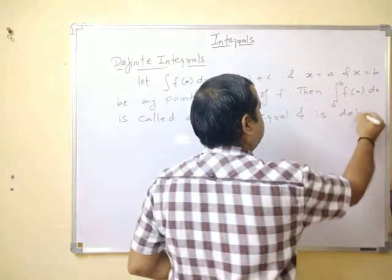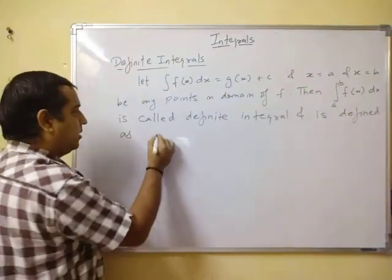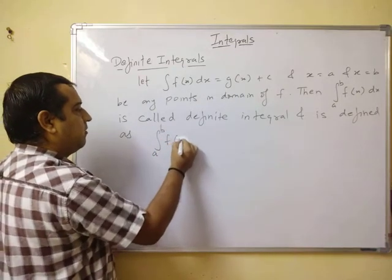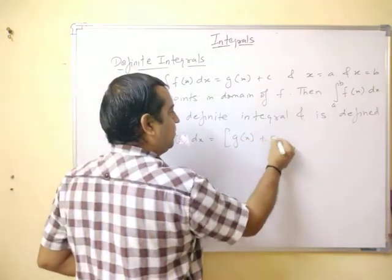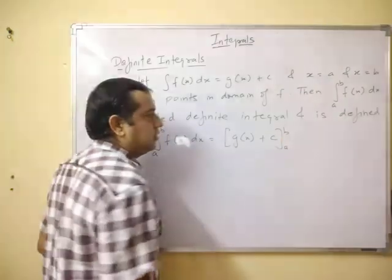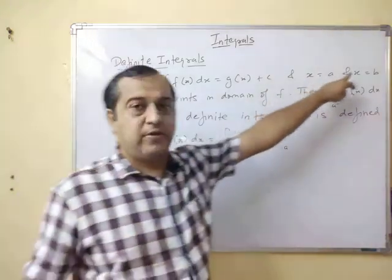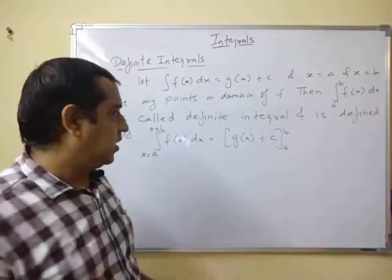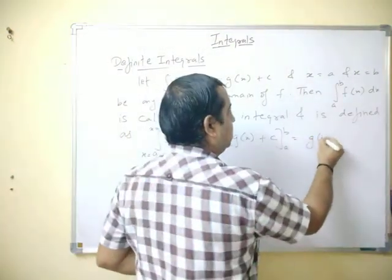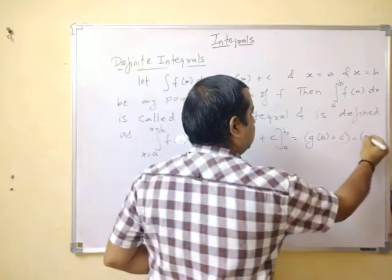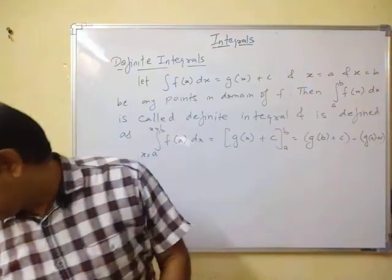It is defined as: integral from a to b of f(x)dx equals g(x) evaluated from a to b. Since a and b are values of x, we put those values in, which gives g(b) plus c minus g(a) plus c, as seen in the previous concept.